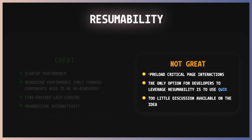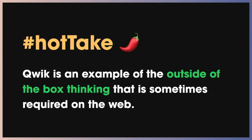The other thing is this kind of locking you have with resumability in Quick, because Quick is the only option as far as I know to this day where you can use resumability per se. And because of that, all of the discussions, use cases, and et cetera are coming from the Quick community or Builder.IO itself. Still, I think that Quick is a perfect example of outside-of-the-box thinking that sometimes is needed for the web.